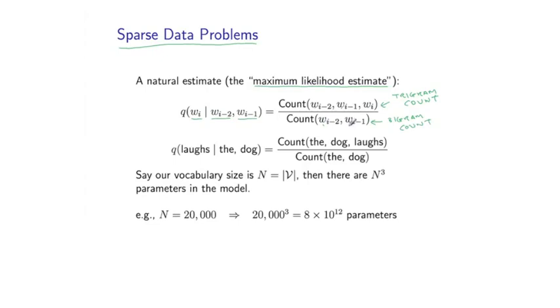So let's take a specific parameter as an example. Say I want to estimate the parameter corresponding to the probability of laughs, given that the previous two words are the and dog. I just have the ratio of these two counts, the trigram count and the bigram count.